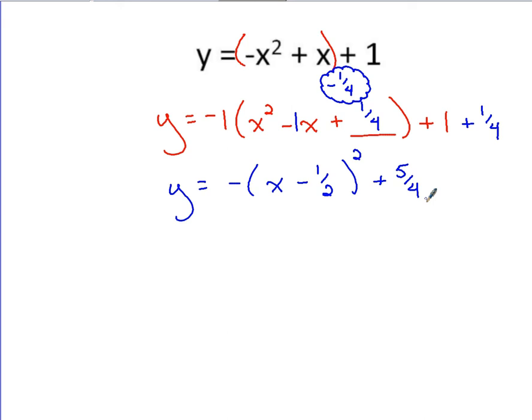There's the vertex form. Meaning the vertex is. The vertex is 1 half for the x coordinate. And 5 fourths for the y.